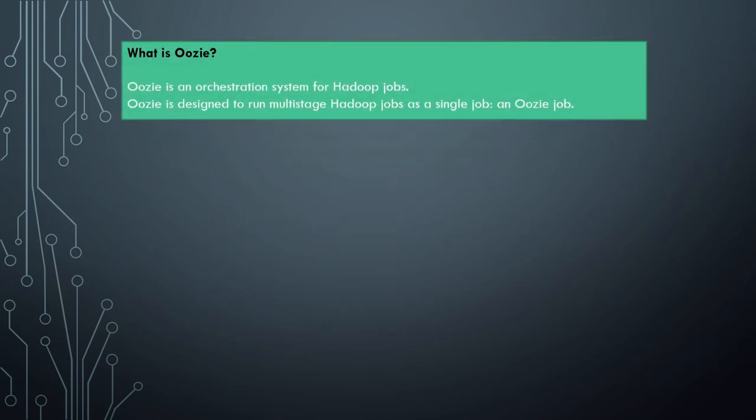First, let's see what Oozie is. Oozie is an orchestration system for Hadoop jobs. In the big data world there are not a fixed number of tools — there are a variety of tools for different tasks. We might use Sqoop jobs for data ingestion, some MapReduce jobs, some Spark jobs, or maybe some Hive scripts. There are a variety of different kinds of jobs that we use in a complete big data pipeline.